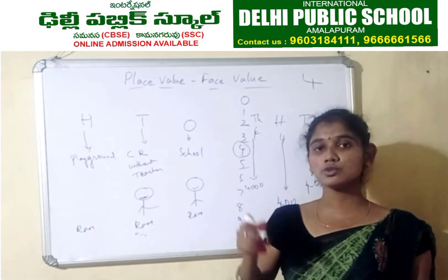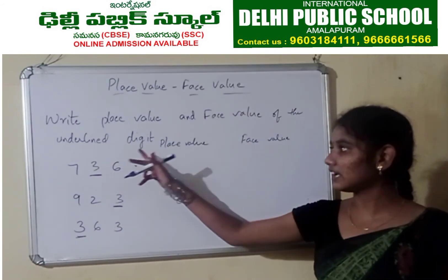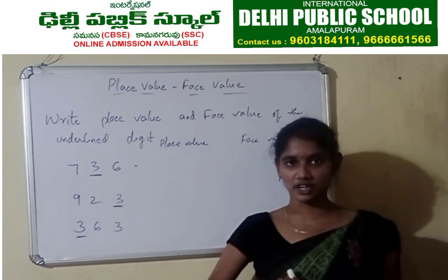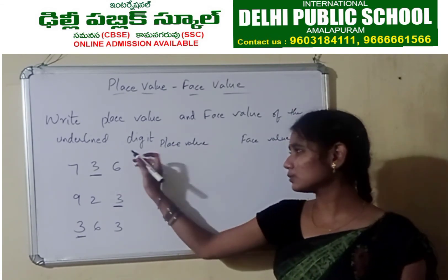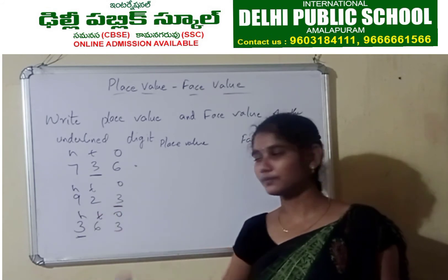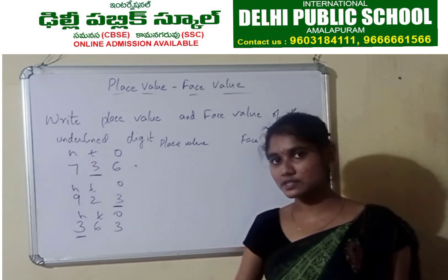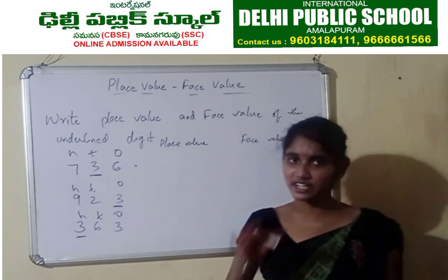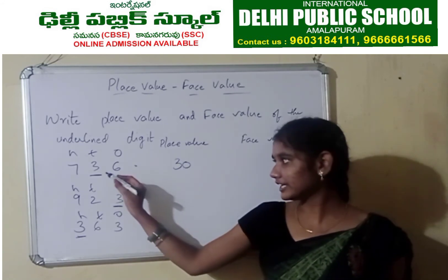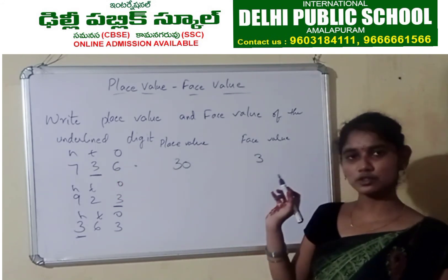Now let us understand how to do sums in place value and face value. Write the place value and face value of the underlined digit. Before doing a problem, write the places on top — ones, tens, hundreds — it will be easy for you to find it out. Here the underlined digit is 3. So 3 is in which place? Yes — 3 is in tens place. That means the value is 3 tens, which is 30. And the face value of 3? Face value is 3 only — it is not changing.